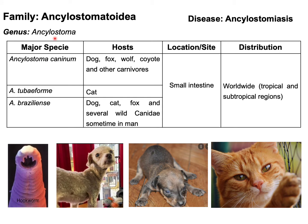Under the genus Ancylostoma there are some important species responsible for causing Ancylostomiasis or hookworm infection in dog, cat, and even in humans. The most commonly occurring species in dogs, foxes, and other carnivores is Ancylostoma caninum. Two more important species are Ancylostoma tubiforme and Ancylostoma braziliense, which cause Ancylostomiasis in cats and other carnivores. For humans, the two important species are Ancylostoma duodenale and Necator americanus. All these parasites are found in the small intestine of the final host and are distributed in tropical and sub-tropical regions of the world.